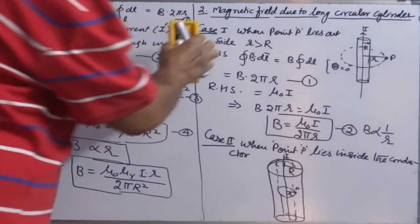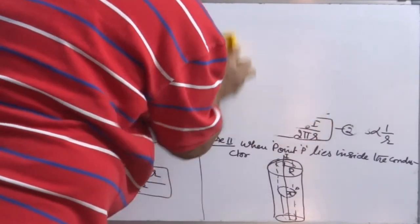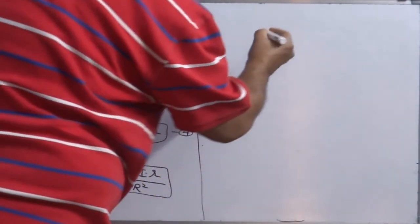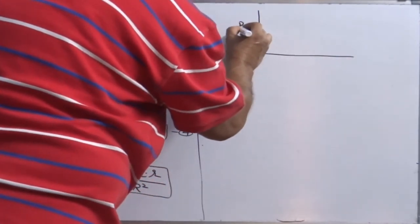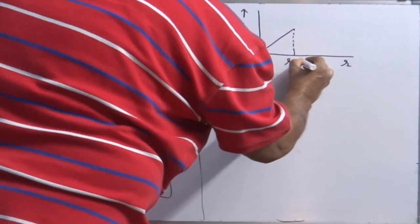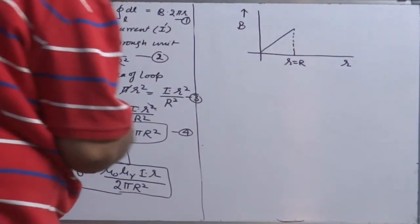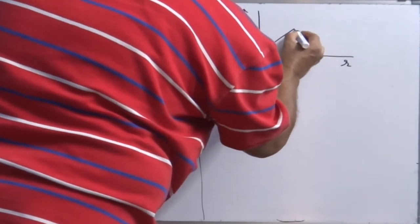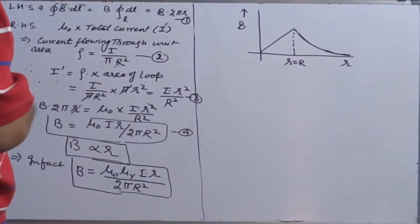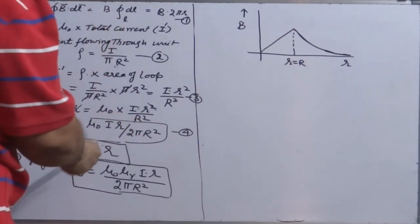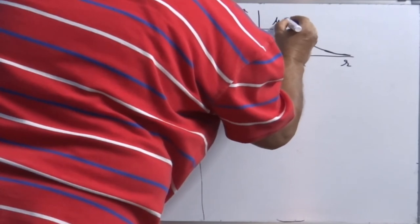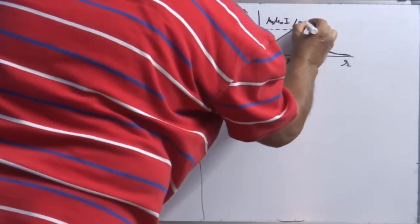If you plot a graph between magnetic field and position of the point, there are two situations. Inside the conductor (r less than R), B increases linearly with r. When r becomes greater than R, B varies as 1/r. At the surface (r = R), B has its maximum value of mu naught·mu_r·I over 2πR.